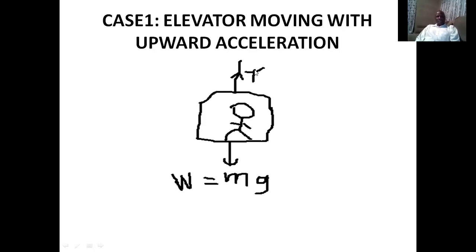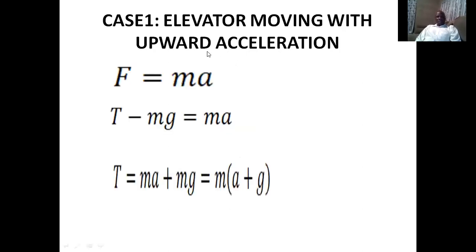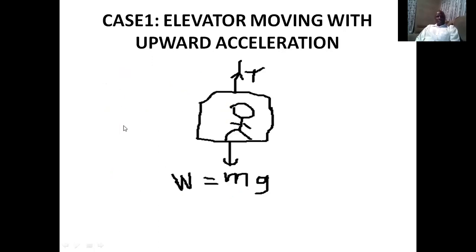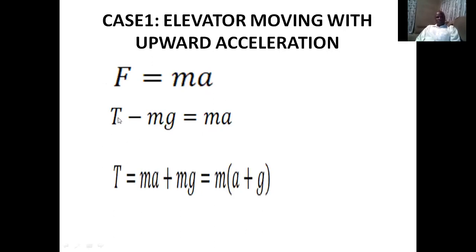When the elevator accelerates upwards, the force pulling it upwards is greater than the force pulling it downwards. This basic concept comes from Newton's second law, where force equals mass times acceleration. Looking at the resultant force, since the tension T upwards is greater than the weight mg, we write: T minus mg equals ma. This means the resultant force is greater than the weight of the object.